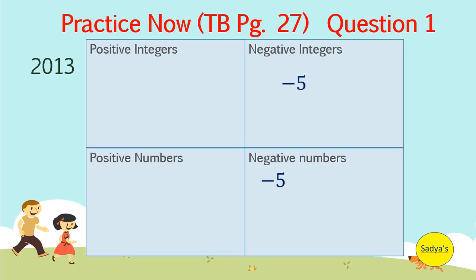2013. No sign with the number indicates it is a positive number and since 2013 is neither a fraction nor a decimal, so it is also a positive integer. 0. 0 is neither positive nor negative so it stays here.